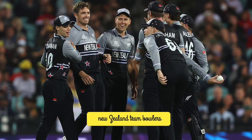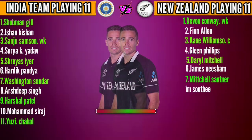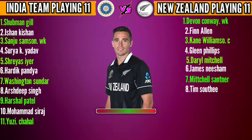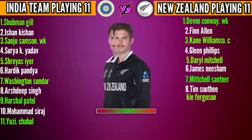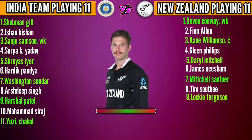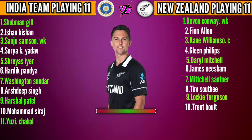New Zealand team bowlers: No.8 Tim Southee, fast bowler. No.9 Lockie Ferguson, fast bowler. No.10 Trent Boult, fast bowler.